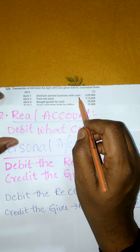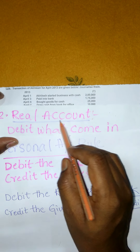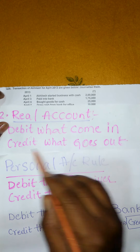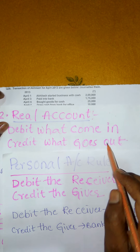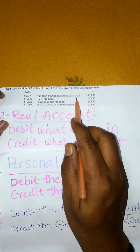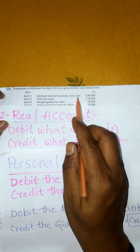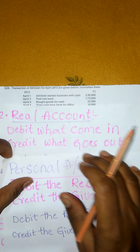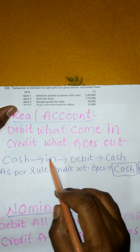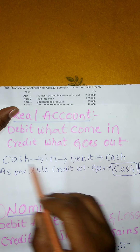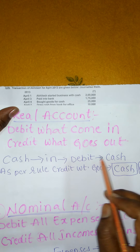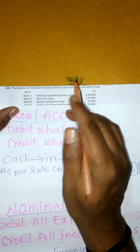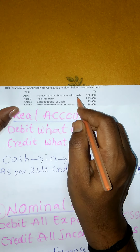Cash real account kabatti, as per real account rule — debit what comes in, credit what goes out. Ikkada ee business loo ki cash raavadam jaruthundi kabatti, debit what comes in — cash business loo ki raavadam jaruthundi, cash in, debit cash. Cash business loo ki raavadam jaruthundi kabatti cash ni debit ghaa choupinchadam jaruthundi.